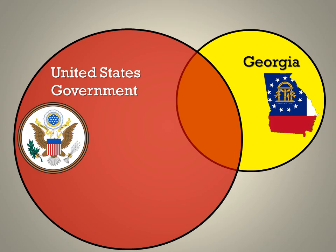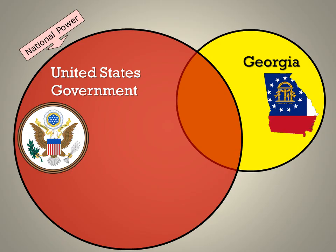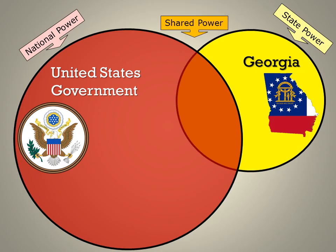The best way to illustrate this relationship is to look at the government of the United States. In fact, the U.S. is the best example of a federal system in the world — we invented it. Here we have a circle of power representing the national government of the United States, another circle showing the authority of the state of Georgia, and an area between the two showing the shared power. If you haven't figured it out yet, that does form a Venn diagram.